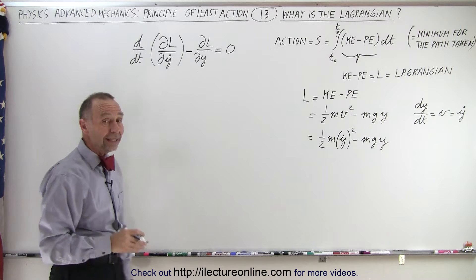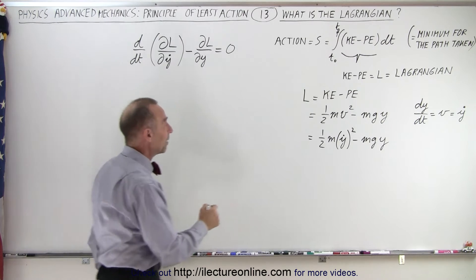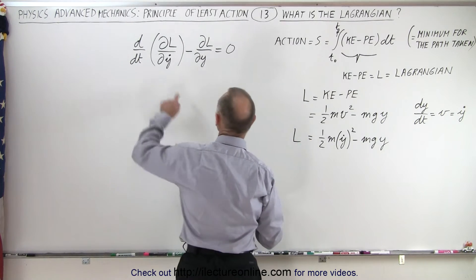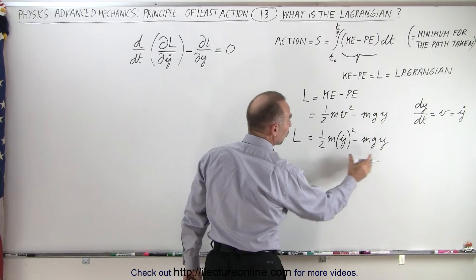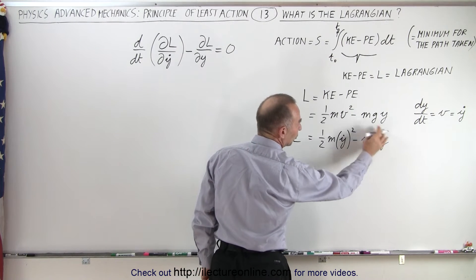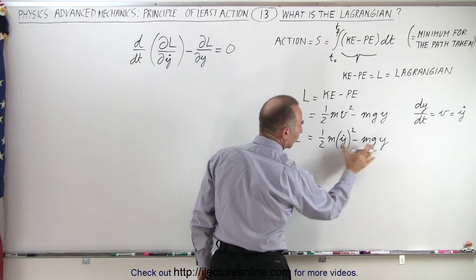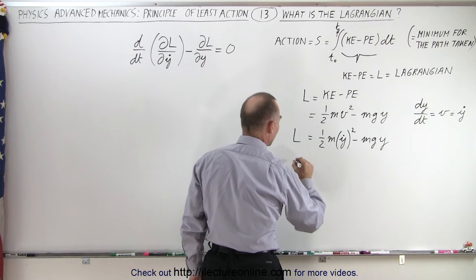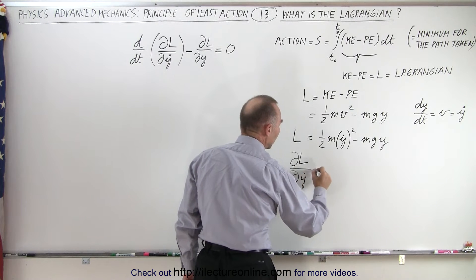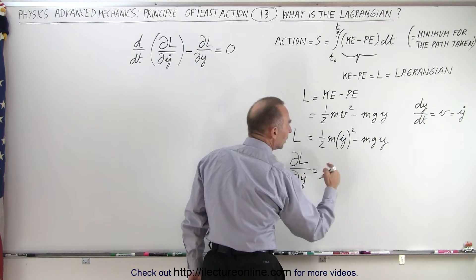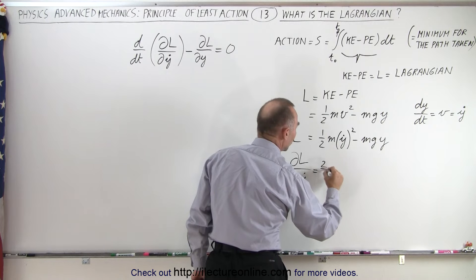Well, let's see if that's indeed true when we do that to what we have here. So first of all, let's take the partial of the Lagrangian with respect to y dot. Notice there's no y dot in here, so the partial respect to y dot goes to zero for this portion, and for here we can say that the partial of L with respect to y dot is equal to, take the exponent up front, so we get two over two, m y dot to the first power,